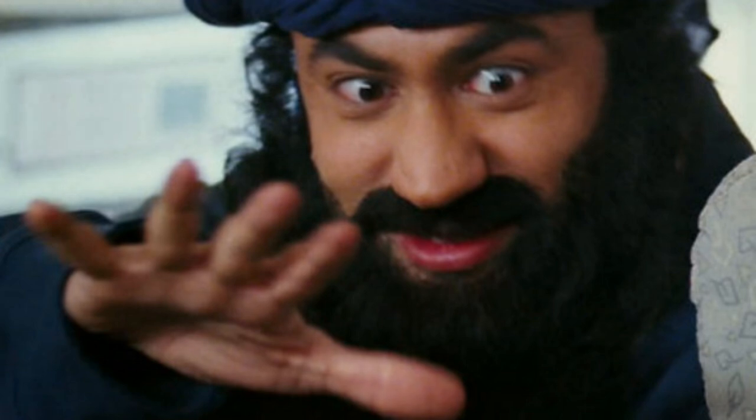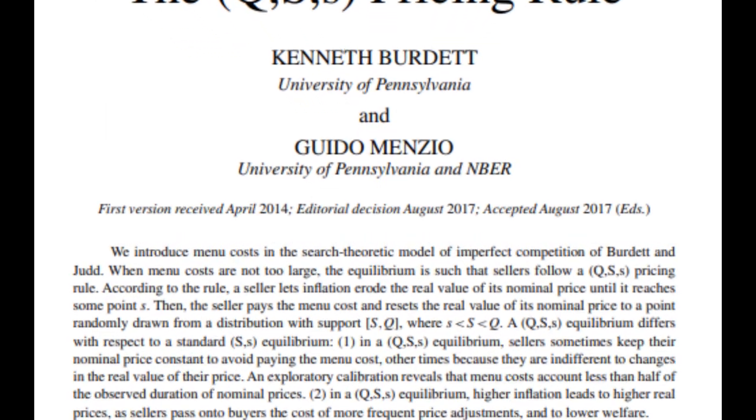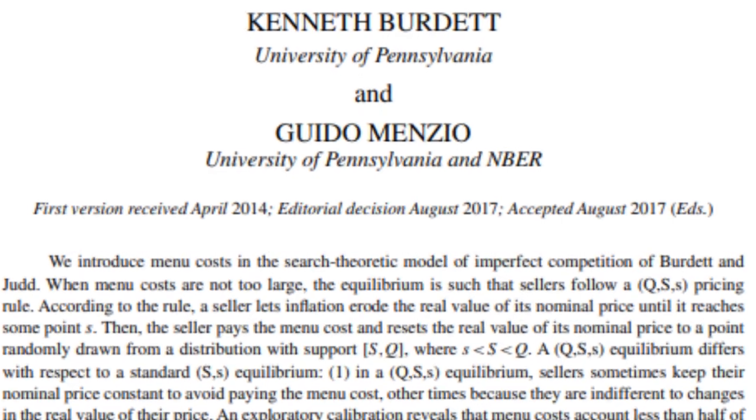The man was then taken off the plane and interrogated about his activities. It was quickly determined to be a misunderstanding. The man, Guido Menzio, was an economics professor at UPenn of Italian origin, and his crazy scribbling was his computations that would eventually become a paper entitled The QSS Pricing Rule. This incident would end up being the third article listed on a Google search of his name, but this is not the incident of a man getting interrogated because of his mathematics that I wanted to focus on.